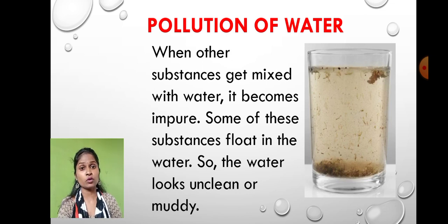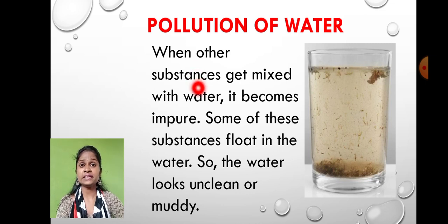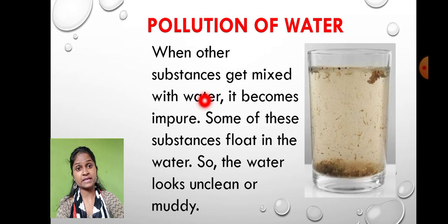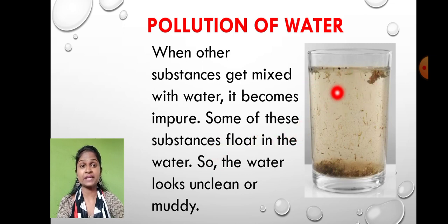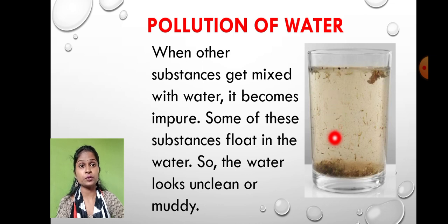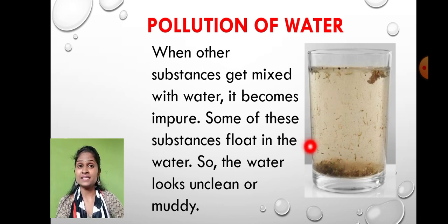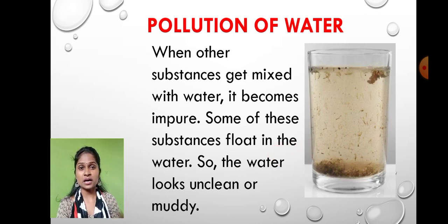What is the basic meaning of water pollution? Whenever other substances get mixed into the water, the water becomes impure. Sometimes these impurities float on top of the water, and many times the impurity settles down at the bottom. That's why the water looks unclean and muddy.